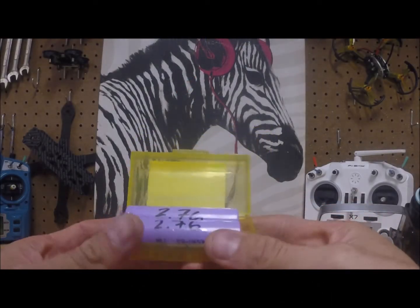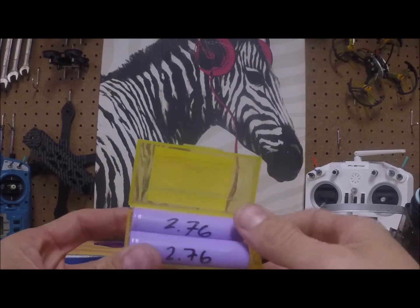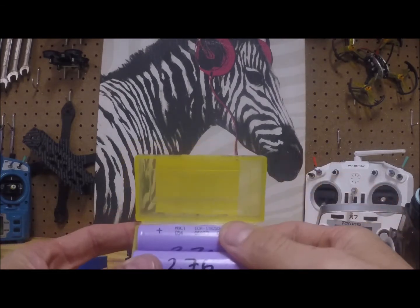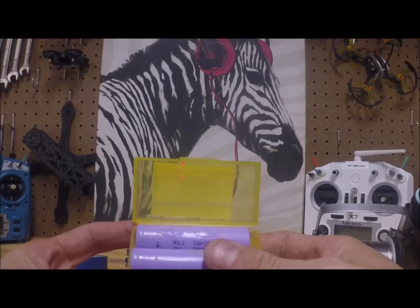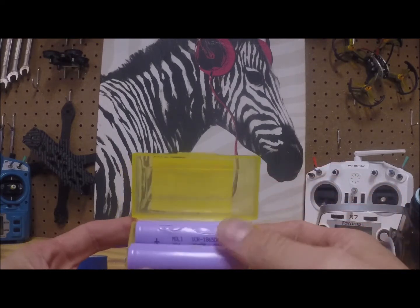Hey guys, welcome back. In this video I'm going to be showing you how to make a two-cell 18650 battery pack for your video goggles. Basically you get these batteries out of any old laptop battery pack.